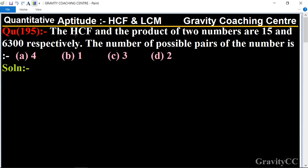In this question, HCF is given as 15. Product of two numbers is given as 6300. So we need to find how many pairs of these two numbers are possible.